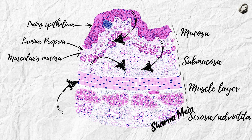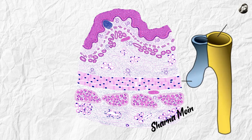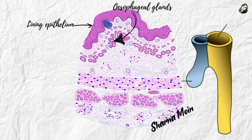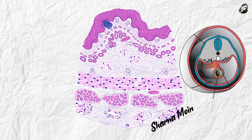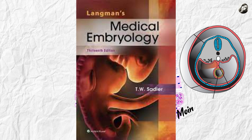The primitive gut tube — specifically the foregut — forms just two things: the lining epithelium and the cells of the esophageal glands. Since the foregut is an endodermal tube, we can say that the lining epithelium and the esophageal glands are derived from the endoderm. Please see this figure from Langman's Embryology, the best book for learning embryology in my opinion.